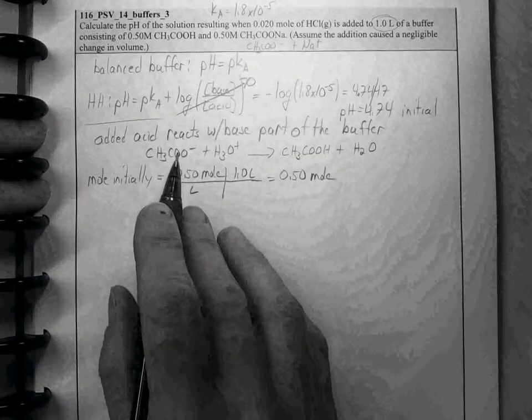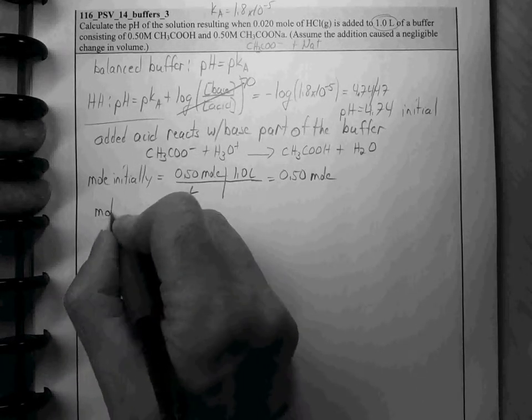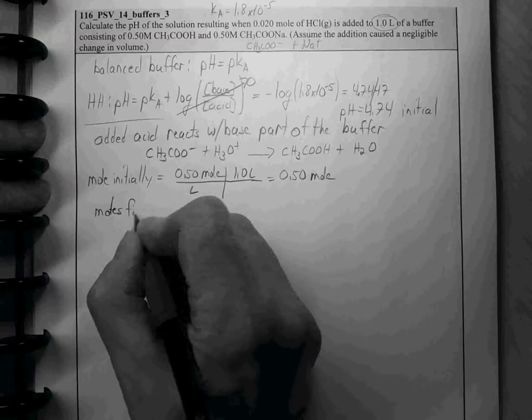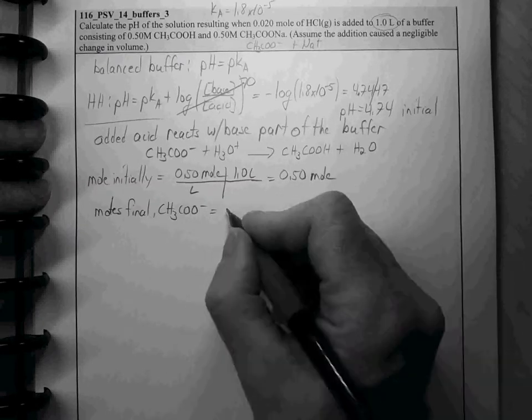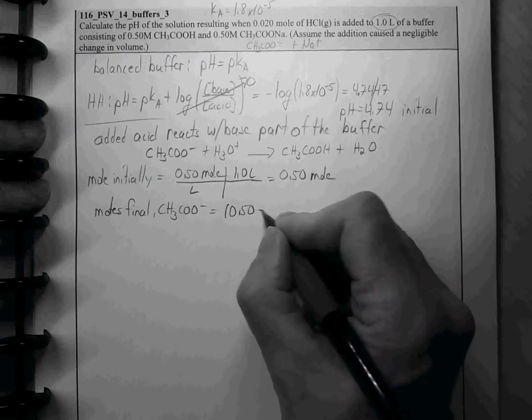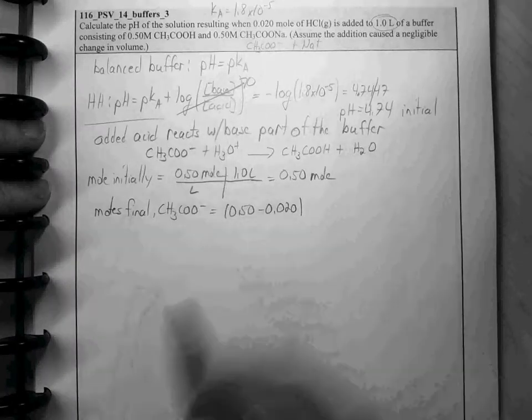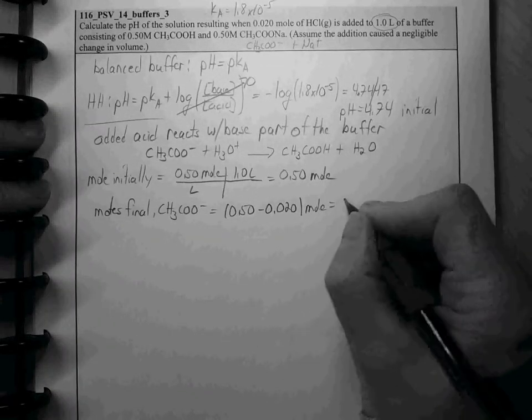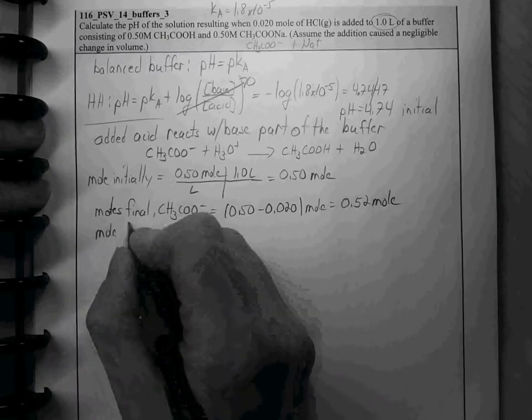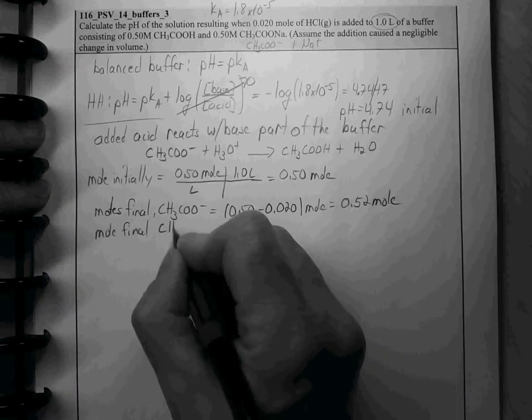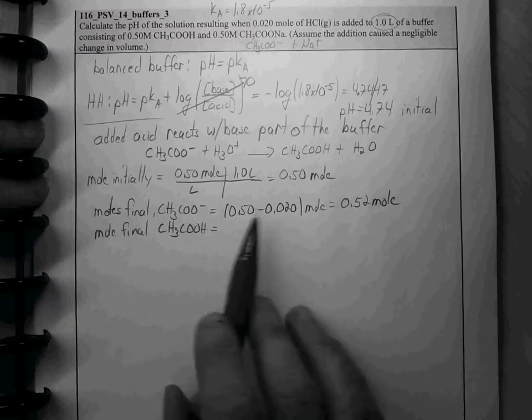So, 0.02 moles of the base is going to react. We started out with 0.50, we're losing an amount equal to the amount of the acid that we're adding.